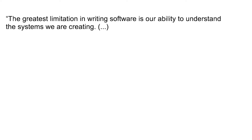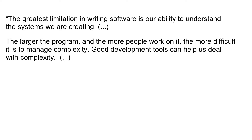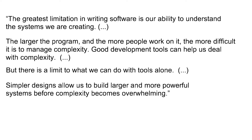There are 21 chapters in the book and you can read each of them in about 10 minutes. The first thing I liked about the book is getting a fresh definition of what software design is. I had my thoughts but the book came with a new one. The whole idea of the book revolves around complexity. According to the author, software design is a means to fight complexity. Quoting the book: the greatest limitation in writing software is our ability to understand the systems we are creating. The larger the program, the more people work on it, the more difficult it is to manage complexity. Good development tools can help us deal with complexity, but there's a limit to what tools can do alone. Simpler design allows us to build larger and more powerful systems before complexity becomes overwhelming.